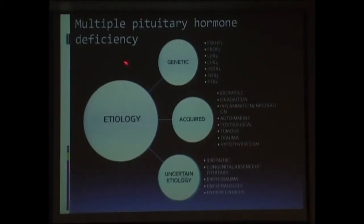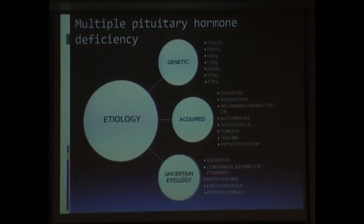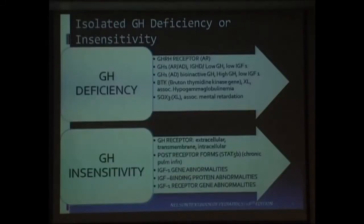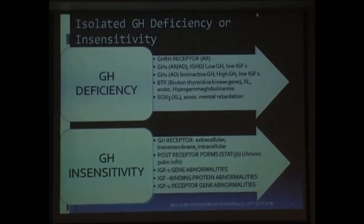This is an extremely busy slide, but I'll just be very brief. GH deficiency could either be an isolated condition or part of multiple pituitary hormone deficiency. The etiology could be genetic — because of various hormonal or genetic defects — or acquired, essentially due to CNS lesions, or idiopathic, where you have congenital absence of the pituitary or conditions like septo-optic dysplasia, which ultimately leads to multiple pituitary hormone deficiencies. Or it could be growth hormone insensitivity, where GH is normal but cannot act because of a defective receptor — for example, Laron syndrome.